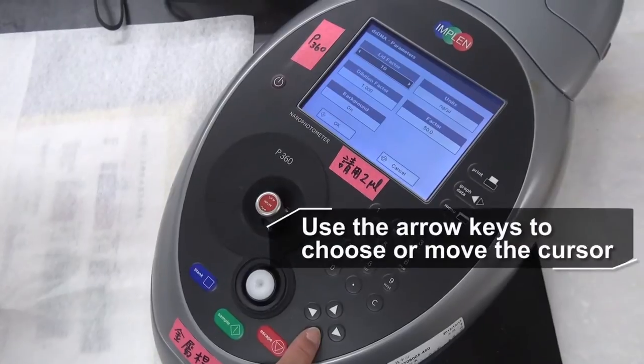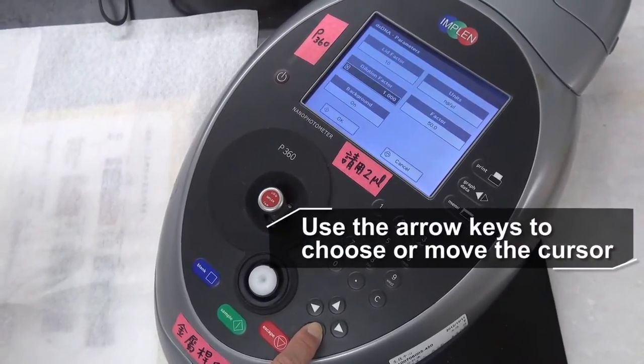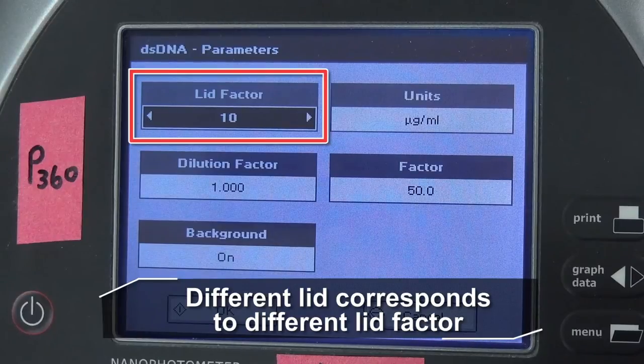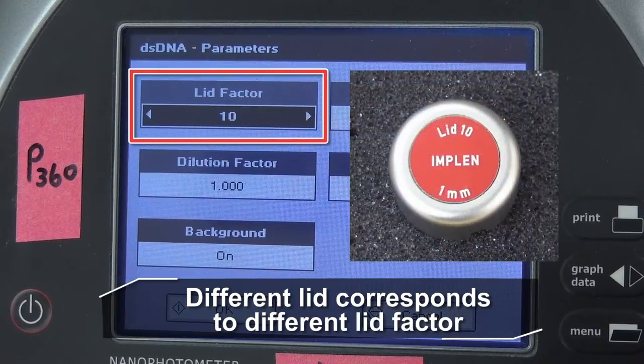Use the arrow keys to choose parameter or move the cursor to make changes. Different lid corresponds to different lid factor which is labeled on each lid.